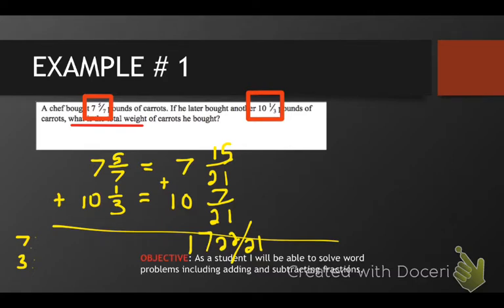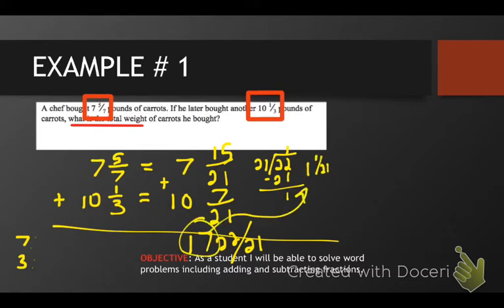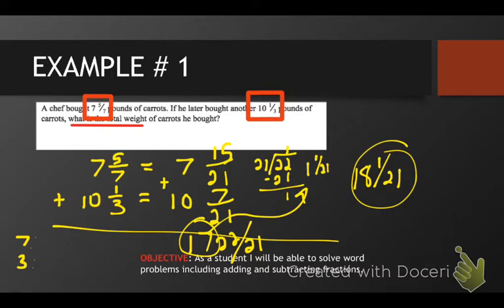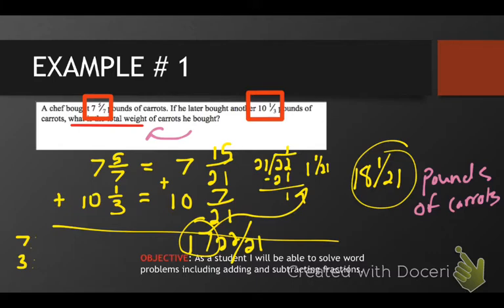Twenty-two over twenty-one is improper and I need to fix it. I would divide: twenty-two divided by twenty-one gives me one with one twenty-first left over. One and one twenty-first — but I can't forget the seventeen. I need to add that seventeen: seventeen plus one gives me eighteen and one twenty-first. That's my answer. However, I also need to make sure that I have a label. It's asking me what is the total weight of the carrots — weight is in pounds. So I have eighteen and one twenty-first pounds of carrots.